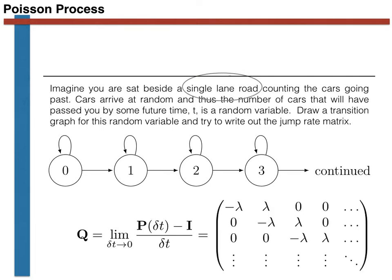You perhaps wrote a jump rate matrix something like the one shown here. The elements along the diagonal are all equal to minus lambda, and the elements on the upper diagonal are all equal to lambda. We have already discussed why the matrix has this bi-diagonal structure: transitions that lower the number of cars are forbidden, and in the limit of infinitesimal time only a single car is allowed to pass. What I have not explained is why all the k, k+1 elements — and by extension the k, k elements — are the same. The assumption we make by setting all these elements equal is that the arrivals of the cars are all independent — there is no correlation between their arrival times.